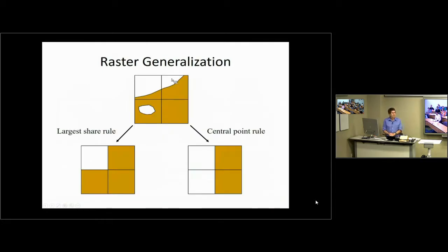Another thing to think about in terms of generalization is what rule is used to go from a vector representation to the equivalent raster. Do you look at just the middle of the grid cell — the central point rule? In one example, the middle of the grid cell is actually in white space, so it would get colored white. Or do you say what is the majority of the grid cell? That might be some sort of averaging and give a different result. When you've got raster data, consider what generalization rule is being used.